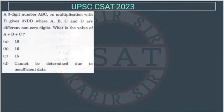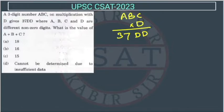Now, see this question. This question is from number system. A three-digit number ABC on multiplication with D gives 37DD, where ABC and D are different non-zero digits. What is the value of A plus B plus C? So, we have to find the value of A plus B plus C.